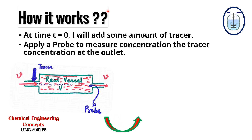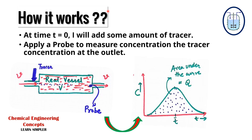We analyze the injection of a tracer pulse for a single-input, single-output system in which only flow — not dispersion — carries the tracer material. This means we assume no back mixing, similar to a PFR assumption, and the tracer moves purely by convective flow across the system boundaries. The flow rate Q is measured at the outlet.